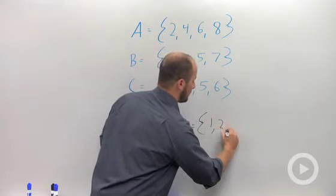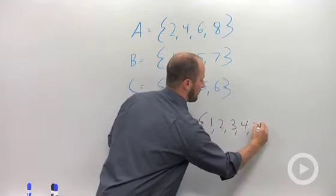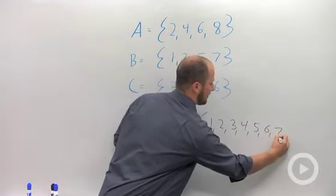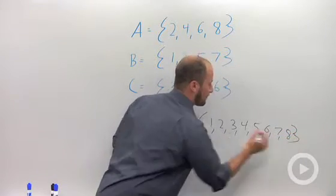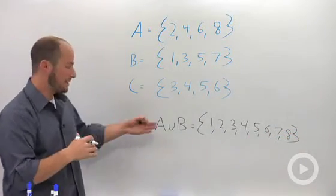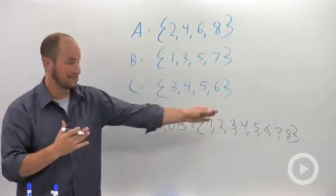You can just write that out: 1, 2, 3, 4, 5, 6, 7, 8. So the union of A and B is a set of all these numbers.